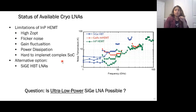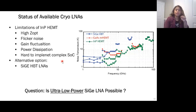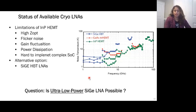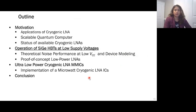As an alternative option, silicon germanium HBT transistors have recently emerged. The performance of these SiGe HBT LNAs is comparable with the indium phosphide HEMT LNAs and they show very good performance at cryogenic temperatures. So the question we want to answer is: can we design ultra-low-power silicon germanium LNAs with the same or comparable performance as HEMT LNAs, for further scalable quantum computers?